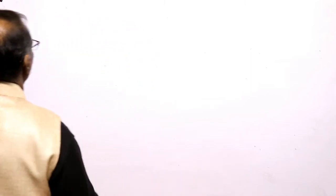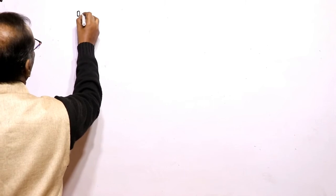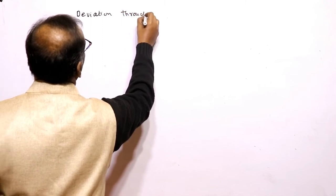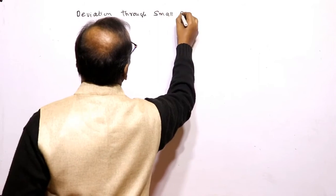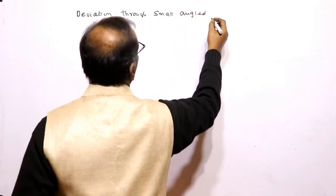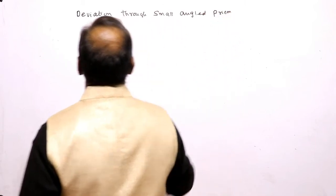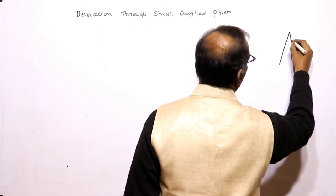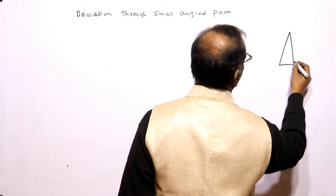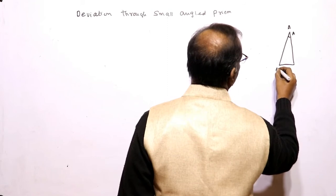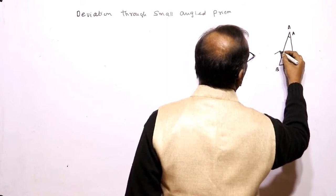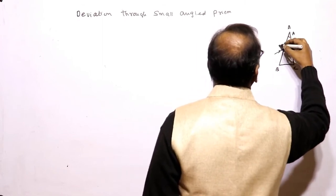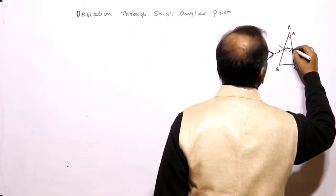Deviation through a small angled prism. Let us see a prism. Small angled prism means angle of incidence and angle of prism are all small. This is side A, this is angle A, this is B, this is C. This is the angle of incidence, the ray goes like this. This is the ray, and at this place is the normal.